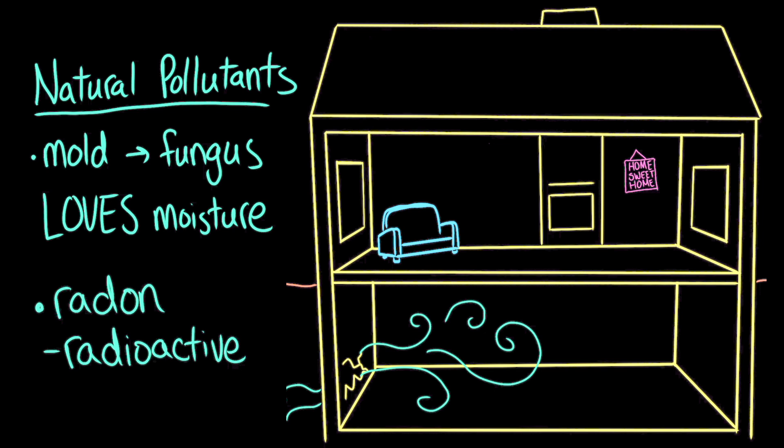Breathing in too much radon could damage lung tissue and even lead to lung cancer. Depending on where the house is built, some places, like Ava's house, are more likely to have radon than others. Ava can prevent radon exposure by sealing up the cracks in the foundation of her house, and by ventilating her basement.